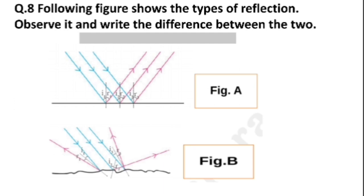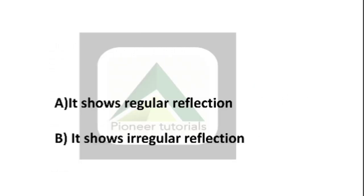Question number 8: The following figure shows the types of reflection. Observe it and write the difference between the two. Figure A shows a smooth surface, which represents regular reflection. Figure B shows a rough surface, which represents irregular reflection.